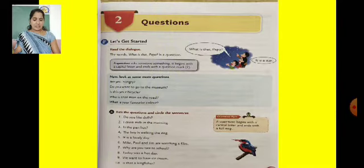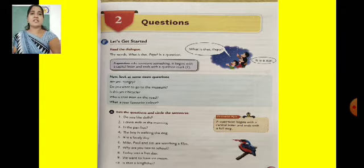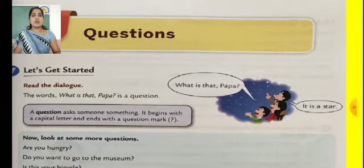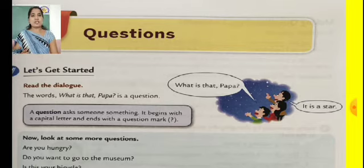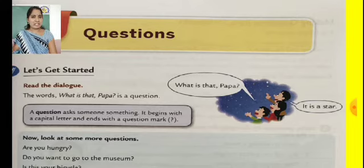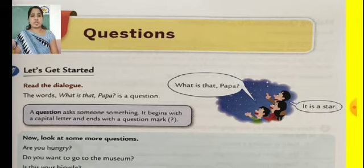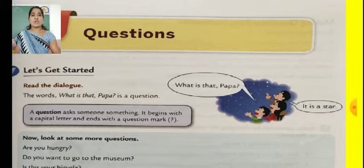See this is the first slide children. If you are having your textbook, page number 15, please open your textbook. See the dialogue children. Read the dialogue. What is that, Papa? is a question. The boy is asking to his father: What is that, Papa? And the father answers: It is a star. So a question asks someone something. It begins with a capital letter and ends with a question mark.